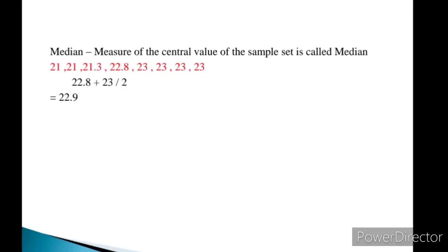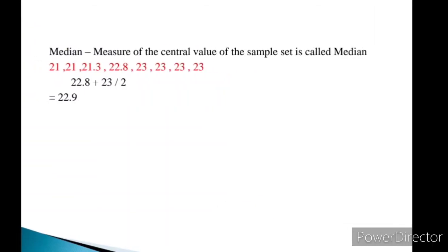After mean, we have median. Median is the measure of the central value of a sample set. For example, if we have values like 21, 21.3, 22.8, 23, 23, 23, and we measure the central value, we get two middle values: 22.8 and 23. We add these two and divide by 2, getting 22.9. So, to calculate the median, you find the central value of the ordered data set.